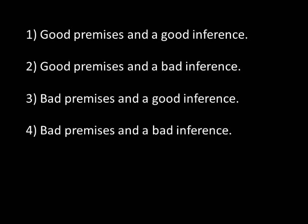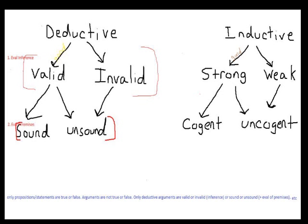Now that you've had some practice evaluating arguments using this two-pronged strategy, it's helpful to think of the possible results of your evaluation. When you evaluate arguments, it's not enough to examine the truth of the premises — you should also examine the inference, the structure, the form, the reasoning. If you disagree with an argument, be very specific about whether you disagree with the premises or the inference. One of the most common logical mistakes is thinking you have a good argument simply because you have all the facts, but you still need to draw good inferences from those facts.